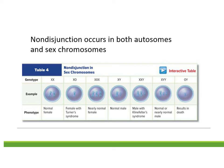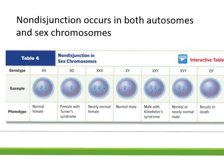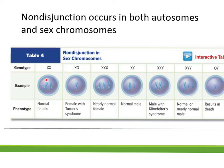Non-disjunction can occur in both autosomes — your regular body chromosomes, like in Down syndrome — or in sex chromosomes. Examples of sex chromosome variations include: normal female XX, Turner syndrome XO, triple X (nearly normal female), normal male XY, Klinefelter syndrome XXY, XYY (nearly normal or 'super male'), and just a Y chromosome alone, which is fatal and the embryo would never develop.